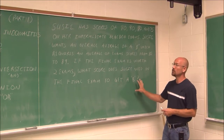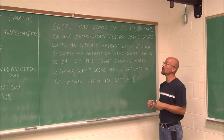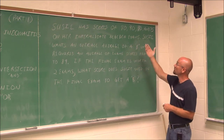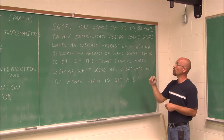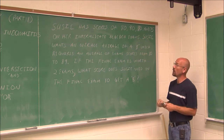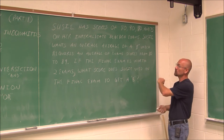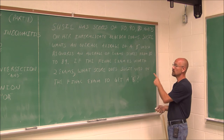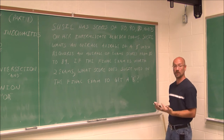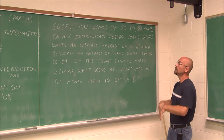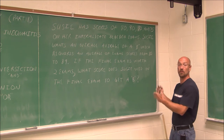We're going to look at an application problem of an intersection, or AND statement. Susie has scores of 80, 90, 82, and 75 on her intermediate algebra exams. Susie wants an overall average of a B, which requires an average of exam scores from 80 to 89. If the final exam is worth two exams, what score does Susie need on the final exam to get a B? Let's break this down — with application problems, we read them carefully, build an equation from it, solve it, and make sure the solution makes sense.